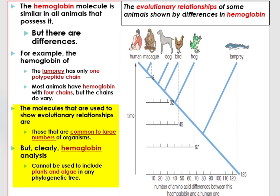The molecules used to show evolutionary relationships are those common to large numbers of organisms. However, hemoglobin analysis cannot be used to include plants and algae in any phylogenetic theory. In this case, we should use another protein molecule — cytochrome C — since cytochrome C exists in all animals and plants.